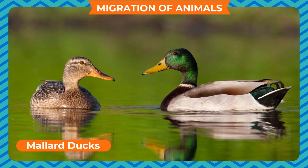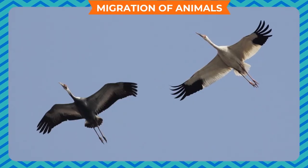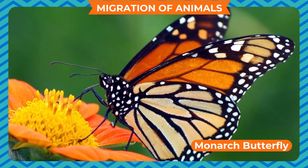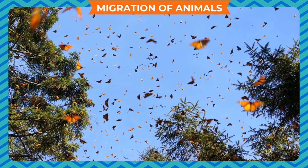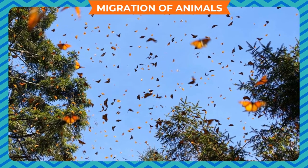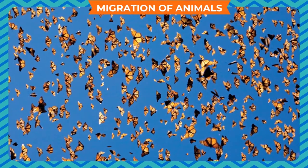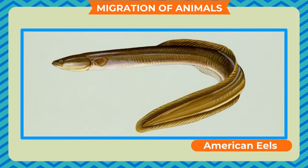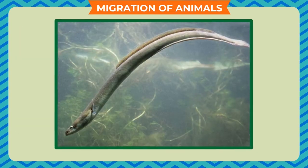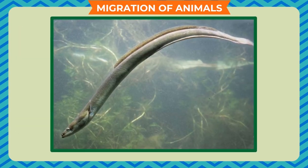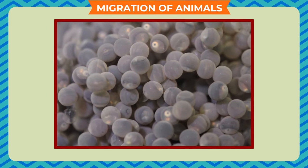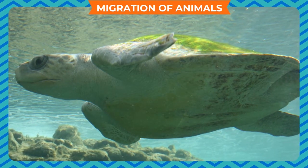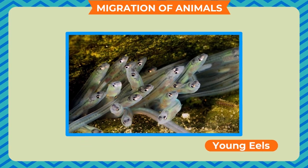Birds such as storks, Siberian cranes, and mallard ducks come to India every winter; when winter is over, they return to their native places. Some butterflies such as the monarch butterfly also migrate from Canada to Mexico in winters and go back in summer. American eels that live in fresh water swim more than 2,400 kilometers to lay their eggs in the sea, to keep them safe from other aquatic animals.